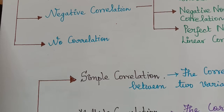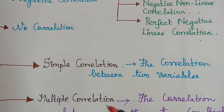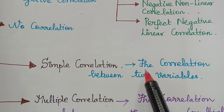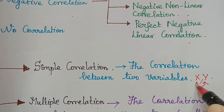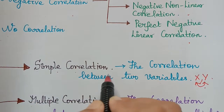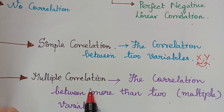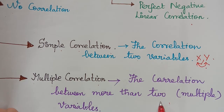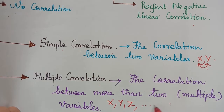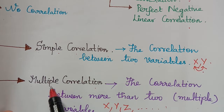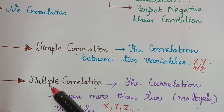Also, by seeing the number of variables, correlation can be classified as simple correlation and multiple correlation. Simple correlation is the correlation between two variables, for example x and y. If the correlation is between more than two variables — for example x, y, and z, or even n number of variables — such a correlation is known as multiple correlation.